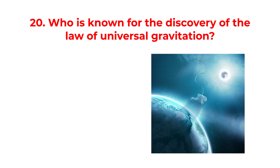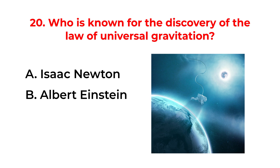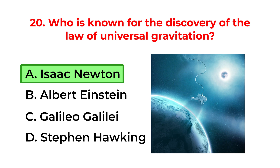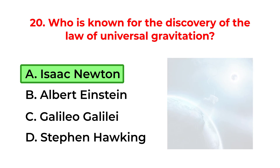Who is known for the discovery of the law of universal gravitation? A. Isaac Newton. B. Albert Einstein. C. Galileo Galilei. D. Stephen Hawking. The correct answer is option A: Isaac Newton.